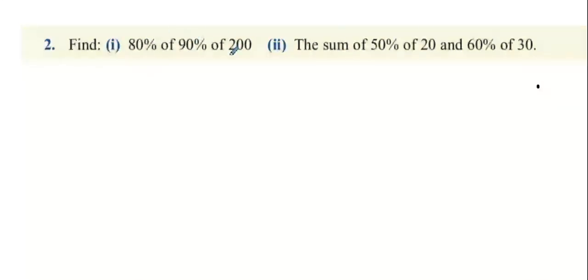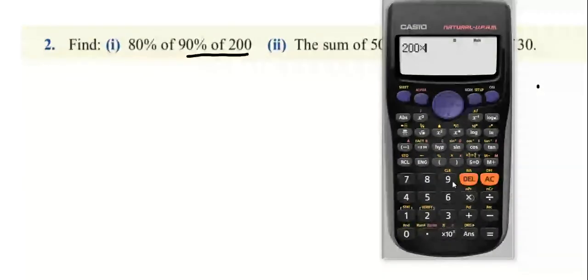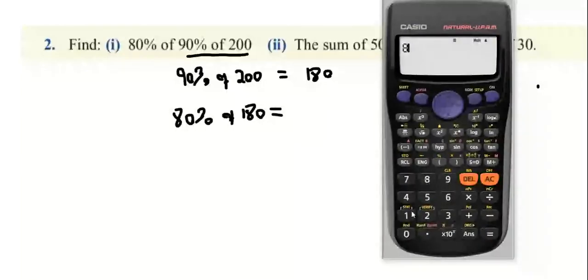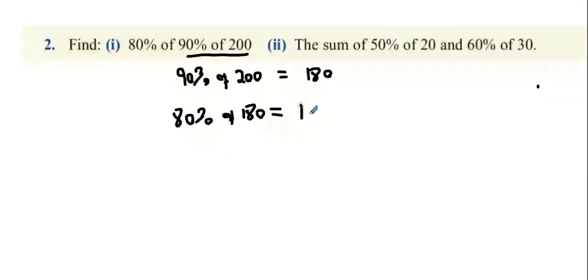Find 80% of 90% of 200. So first of all, find 90% of 200. Multiply 200 by 90%, which equals 180. Then you want to get 80% of 180, which equals 80% multiplied by 180, and we get 144. That's part one done.